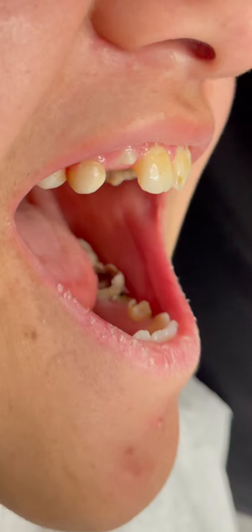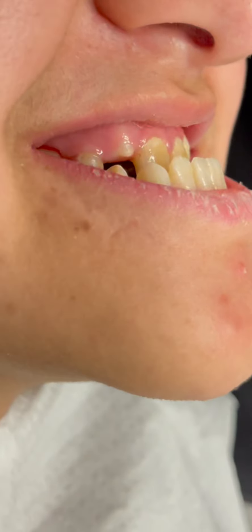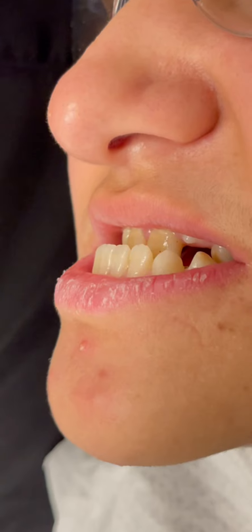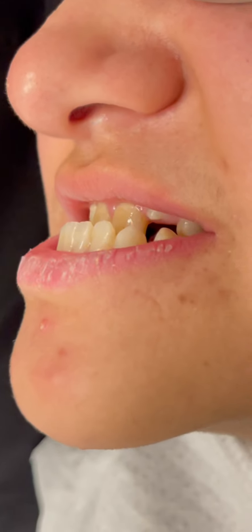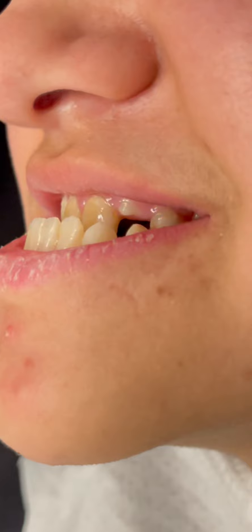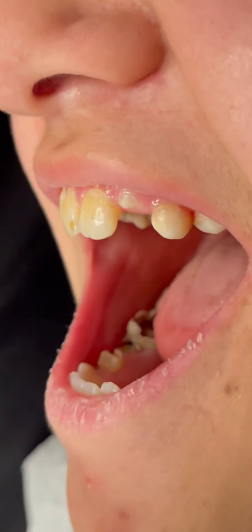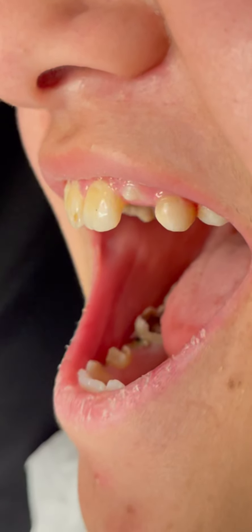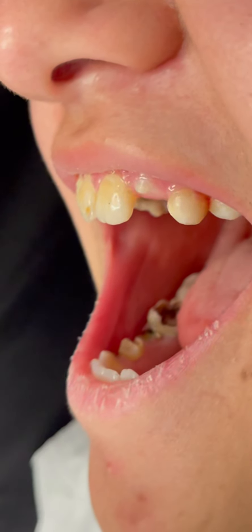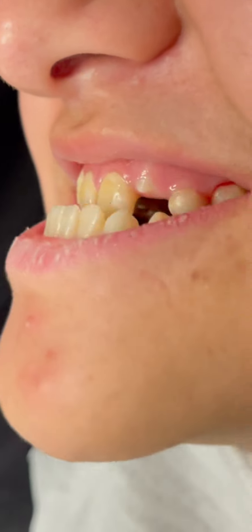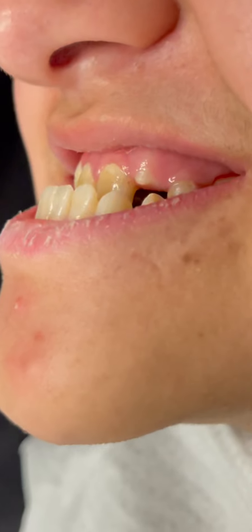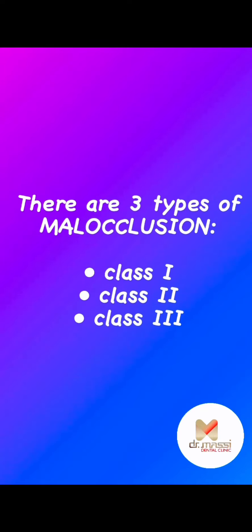There are three types of malocclusion: Class 1, Class 2, and Class 3.